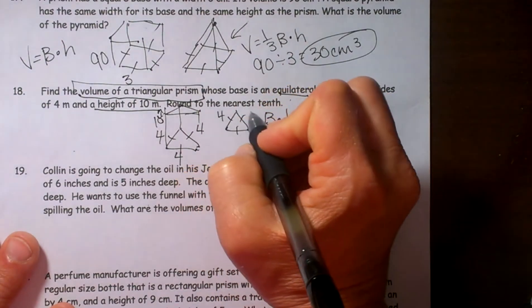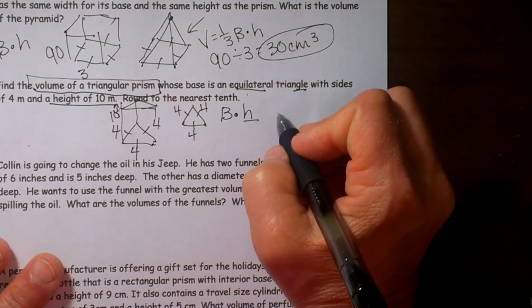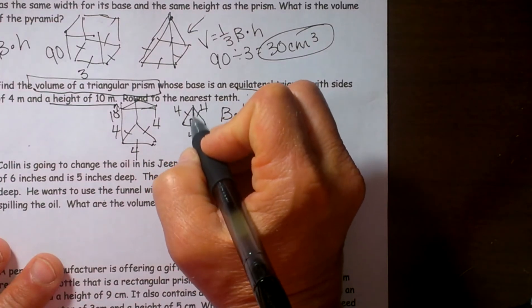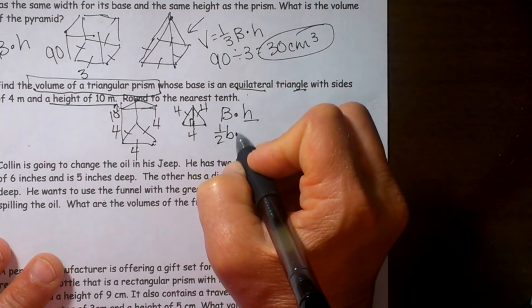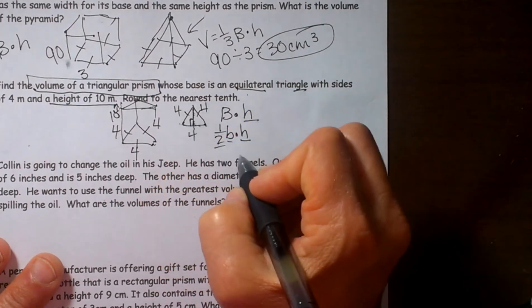Okay, so here is my equilateral triangle four by four by four. And what I am going to do is I am going to drop an altitude down here to find the height. Because I need to find the height for my triangle because the triangle formula is one half the base times the height. Well the base in this case is four.